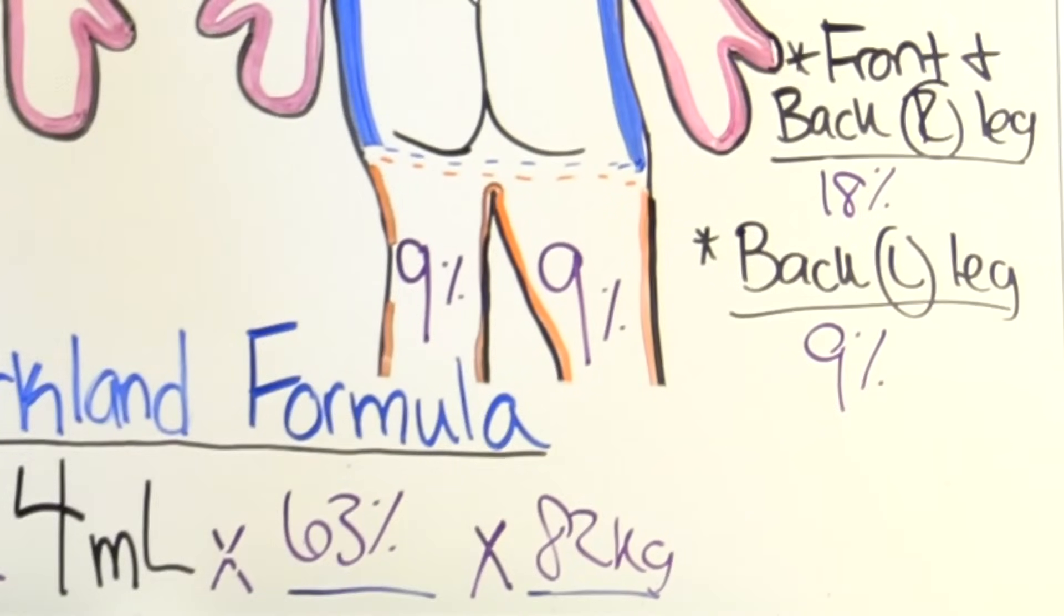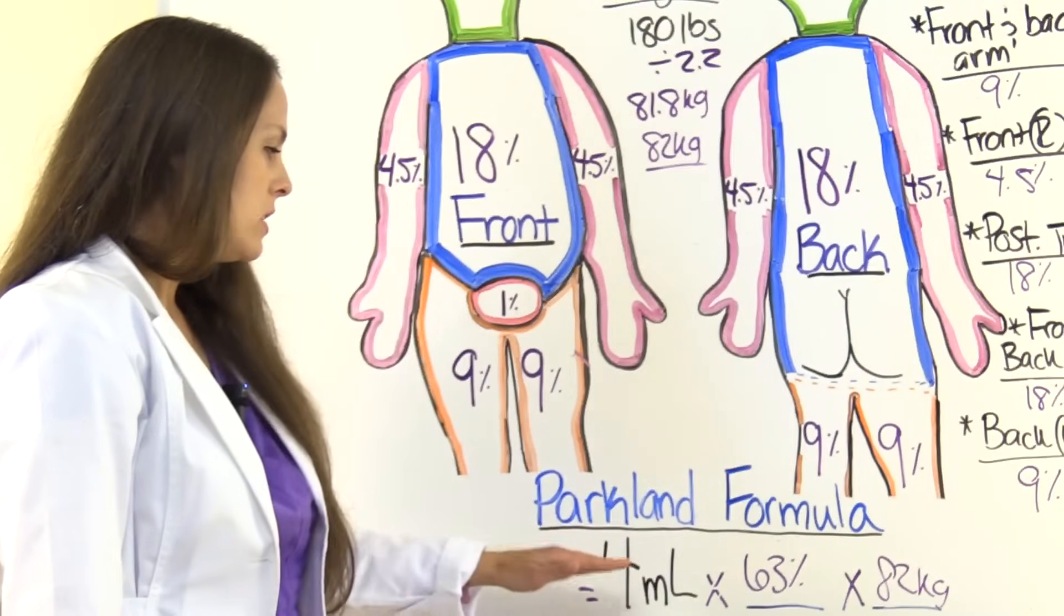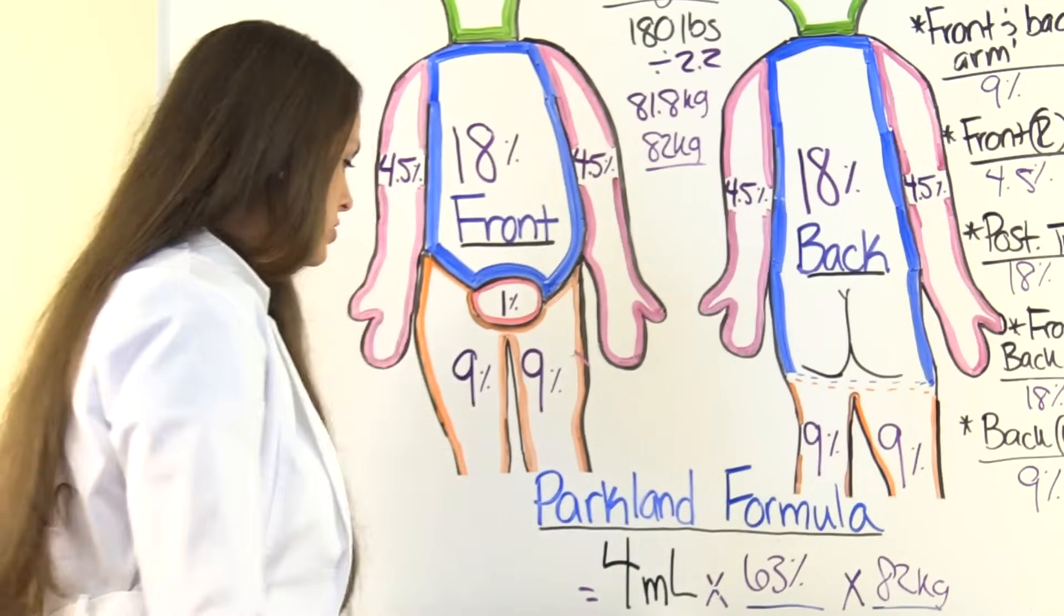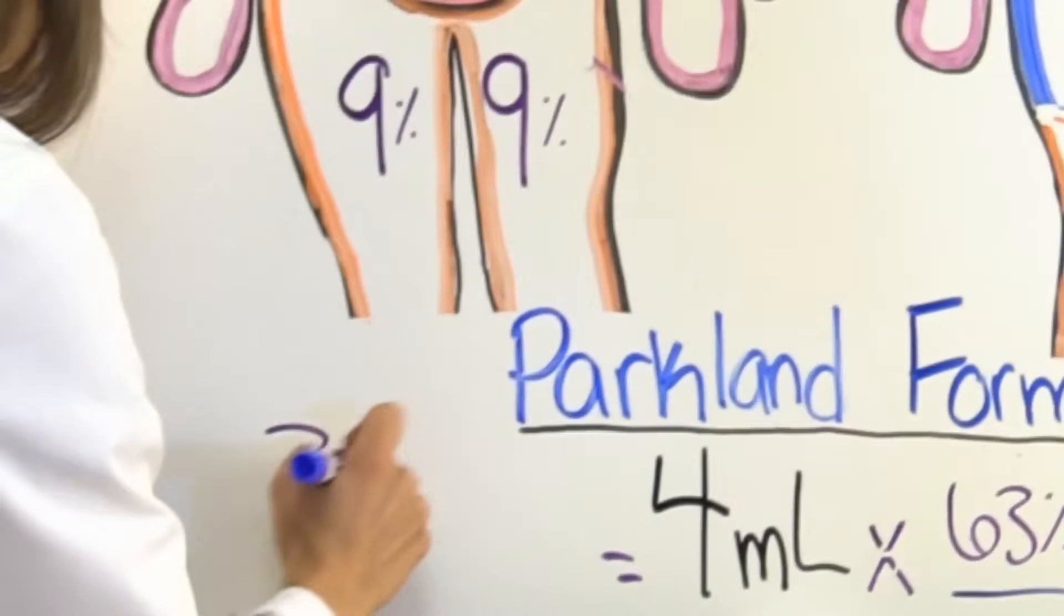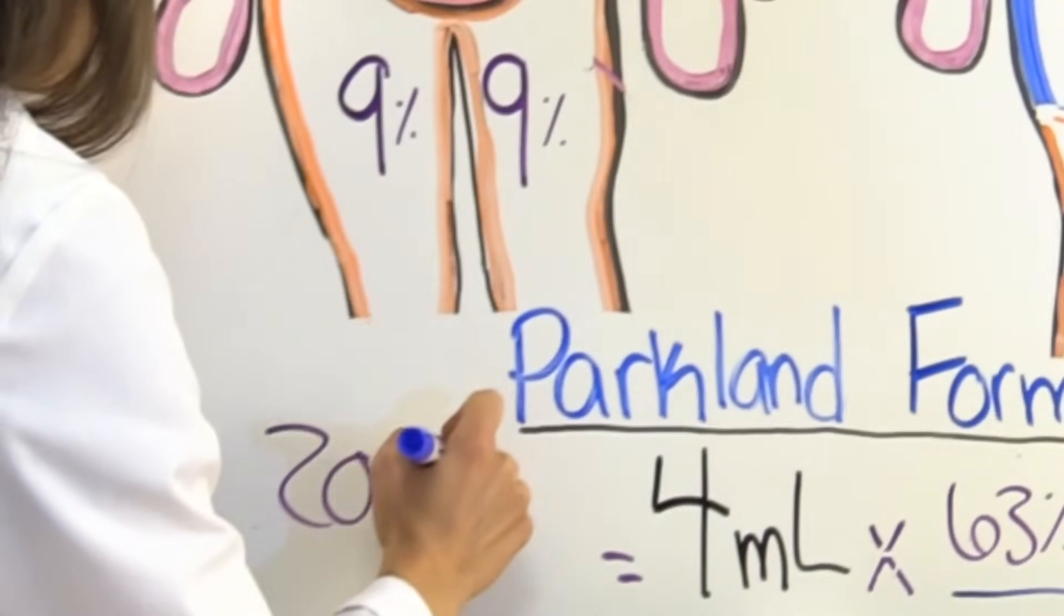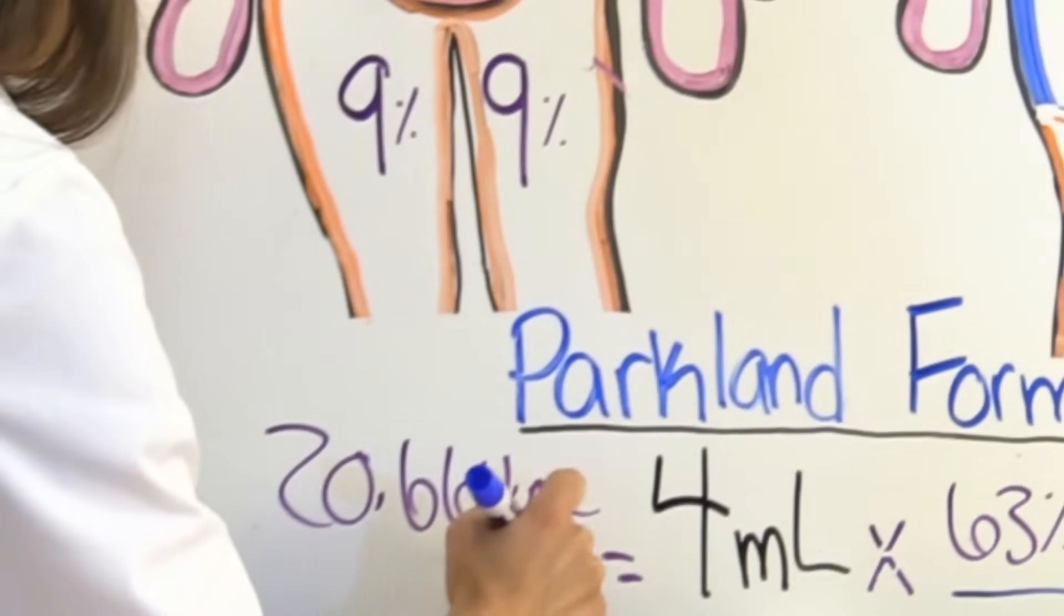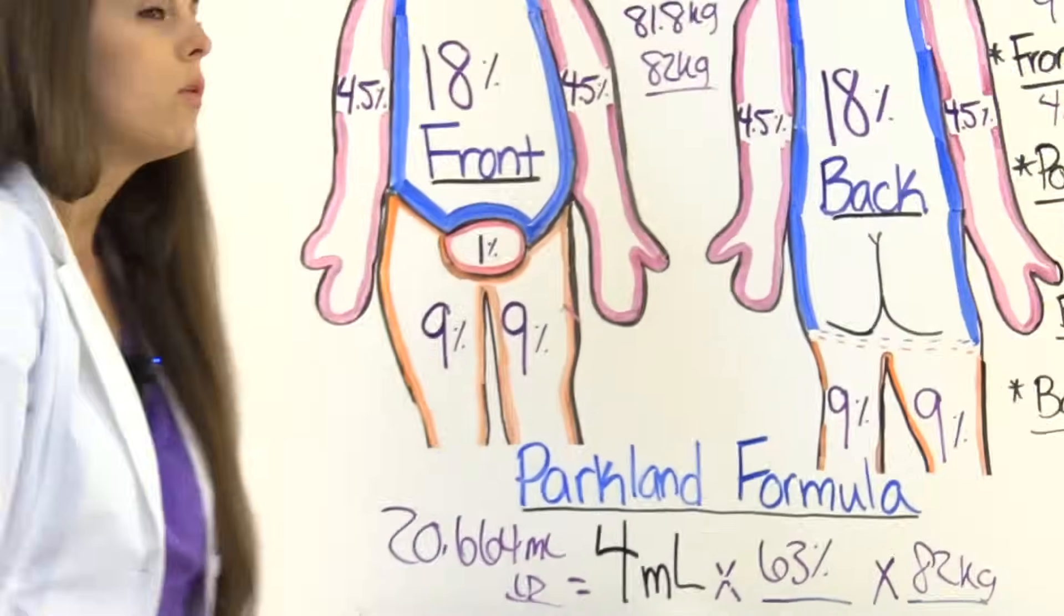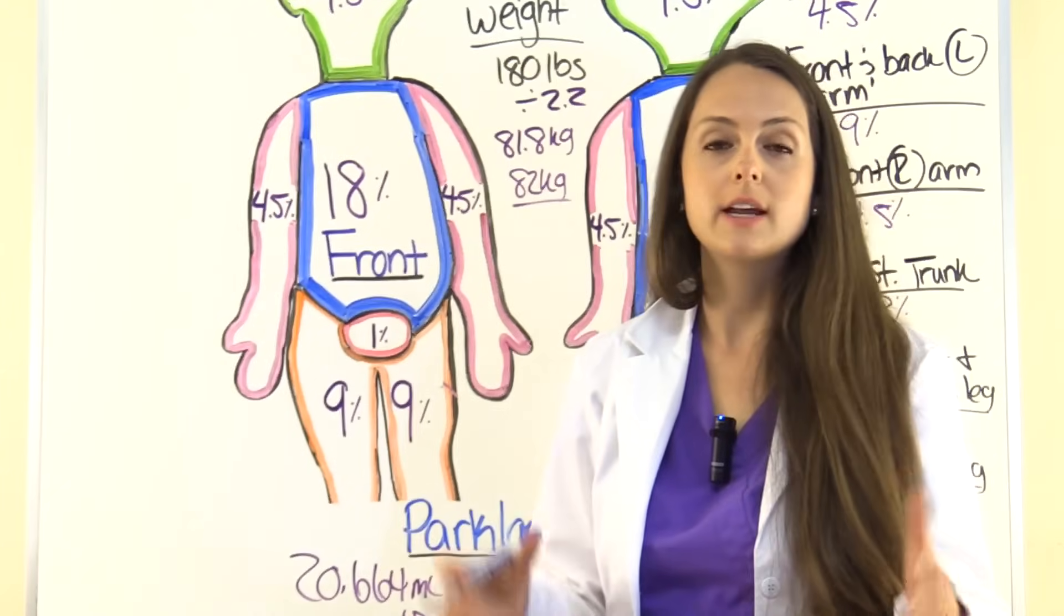So now what we've got to do is multiply, and we get our total volume that we need of LR. So 4 times 63 times 82 equals 20,664. That's our total volume that needs to go in of LR.